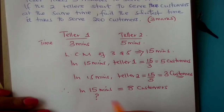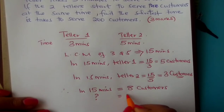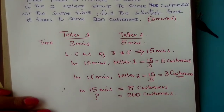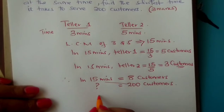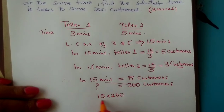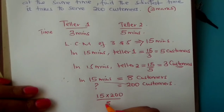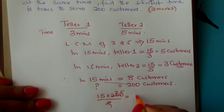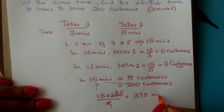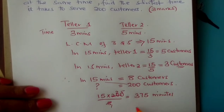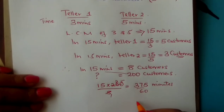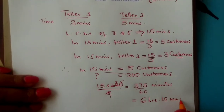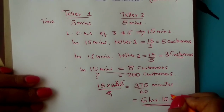You ask yourself: how many minutes will they take to serve 200 customers? You cross multiply and divide by eight. Working it out: 200 multiplied by 15, divided by eight, gives 375 minutes. You can convert this to hours by dividing by 60, giving approximately six hours and 15 minutes, or six and a quarter hours.